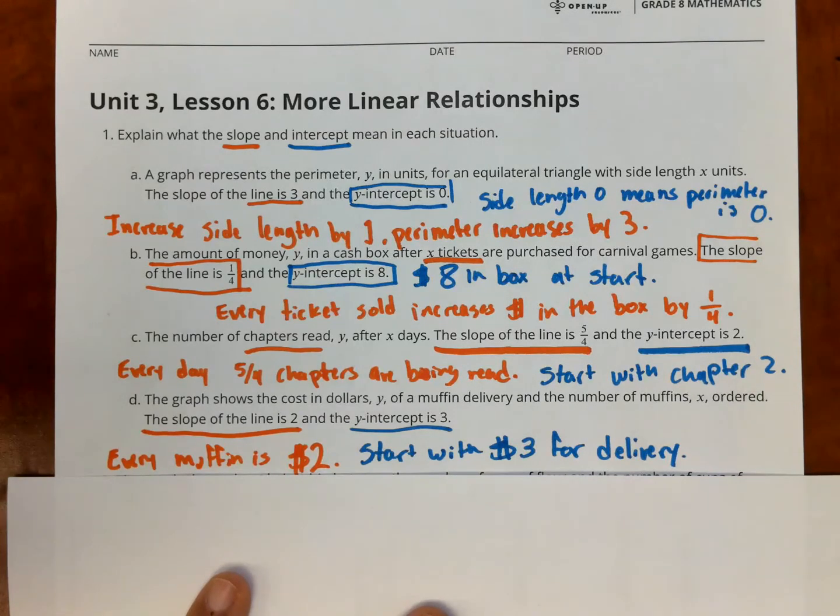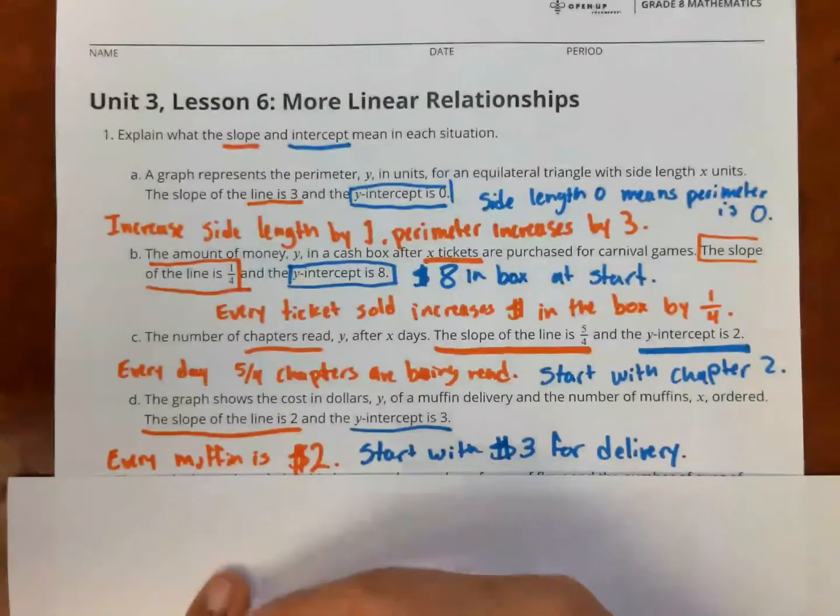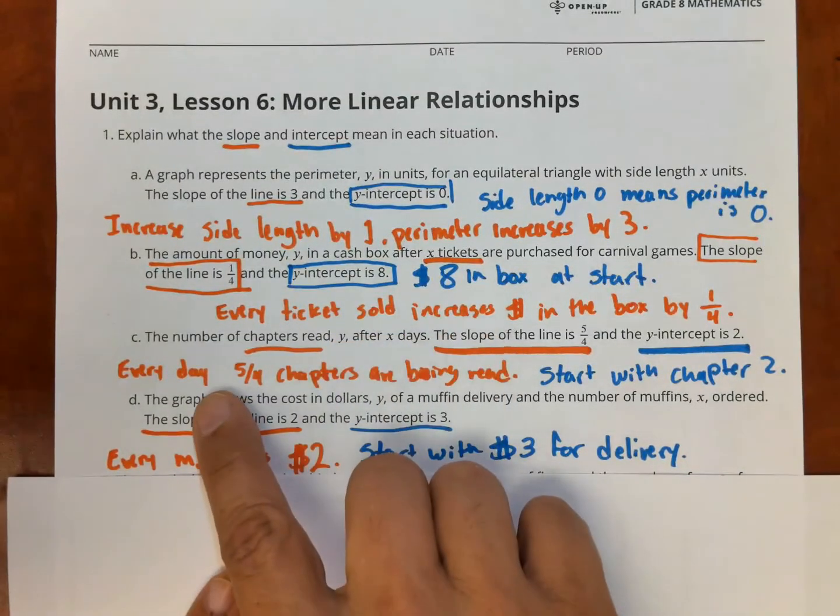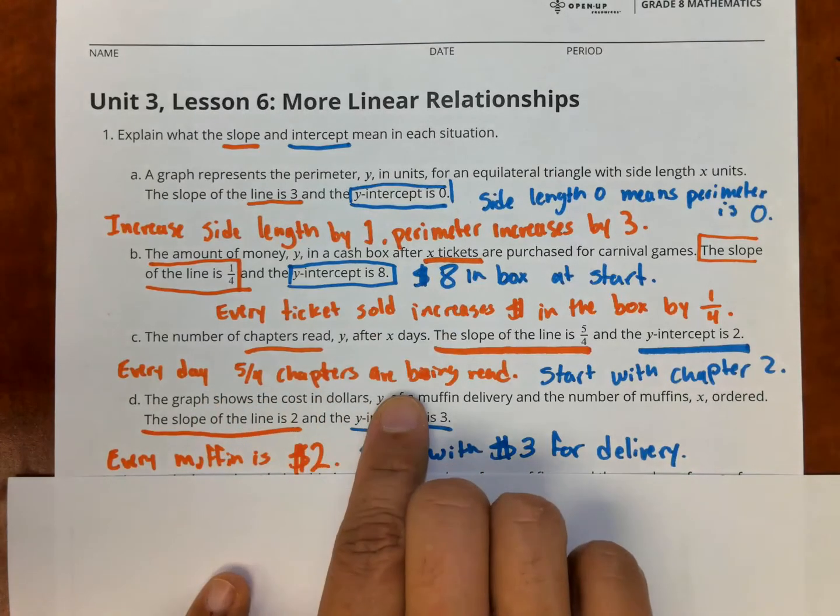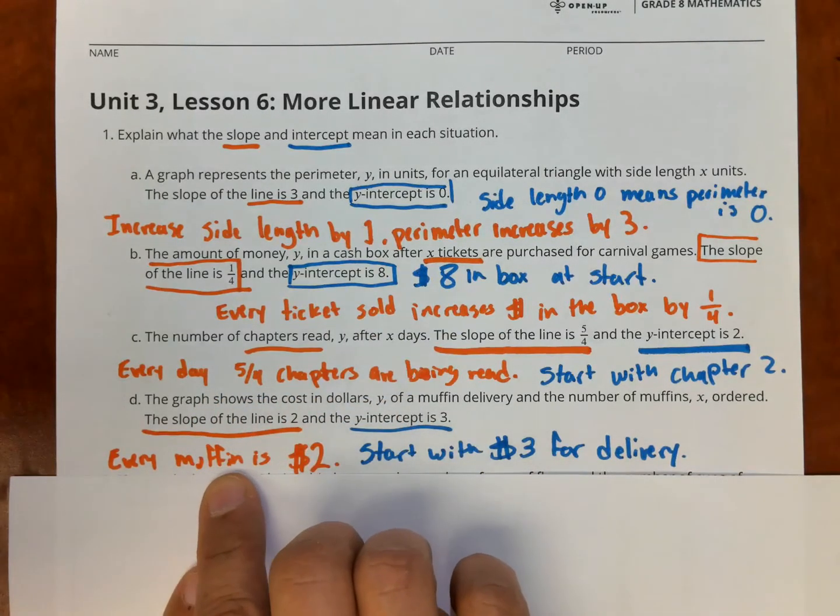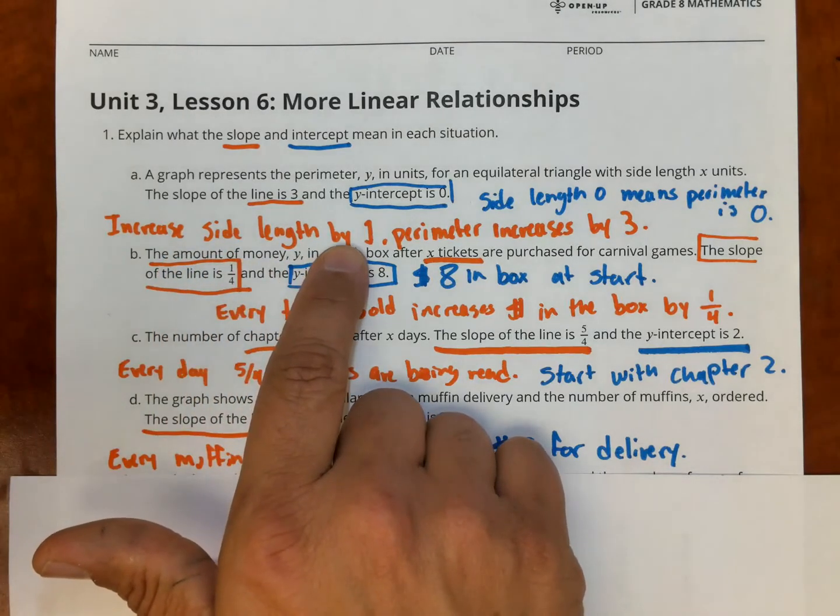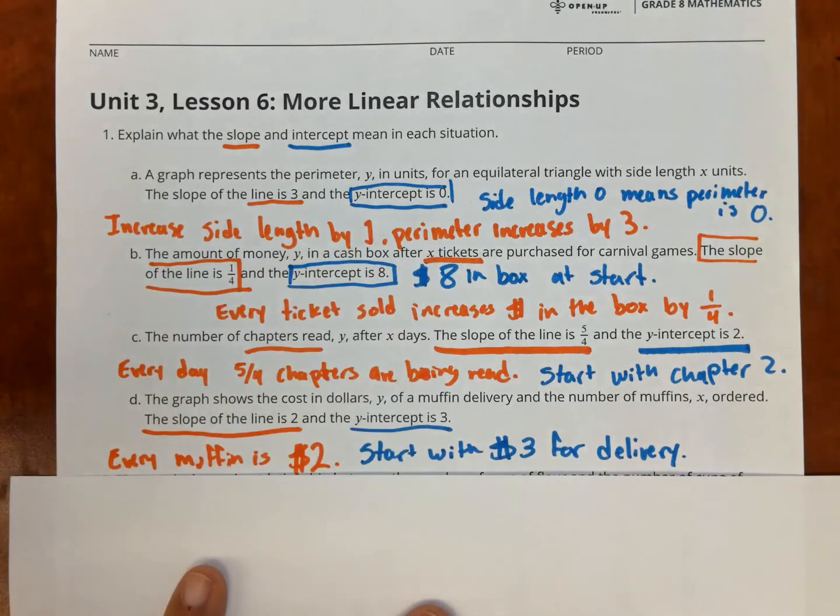For the slope, it's always every something, right? The second one, every ticket increases the money. Every day, if you increase how much you read, every muffin increases here. Right here, every centimeter or unit increases. That's what's happening here with slope.